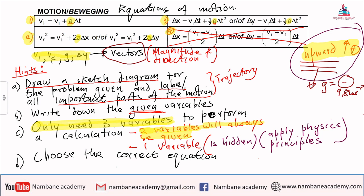We need to assign magnitude and direction to all these physical quantities. Hint number one says draw a sketch diagram for the problem given and label all the important parts of the motion. Labeling the important parts of the motion means I must draw the trajectory, which is the motion of this particular projectile.